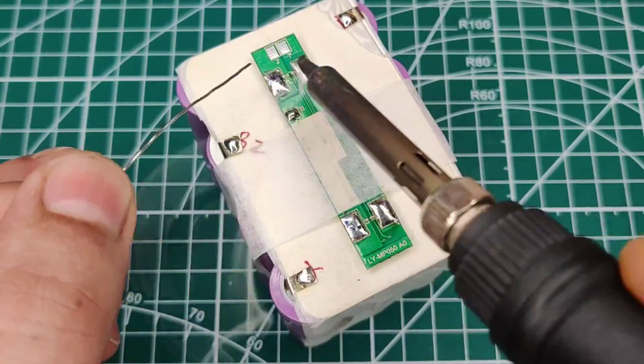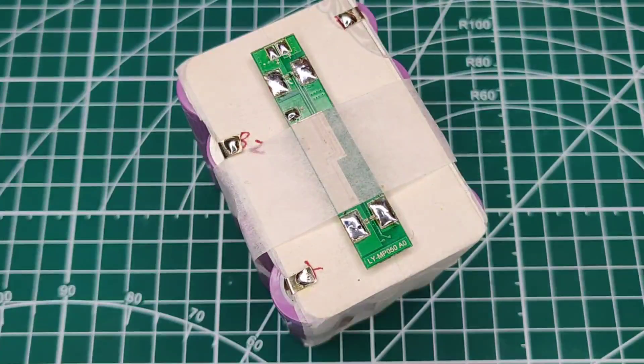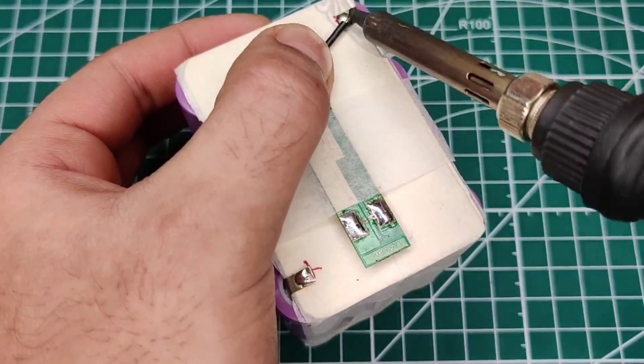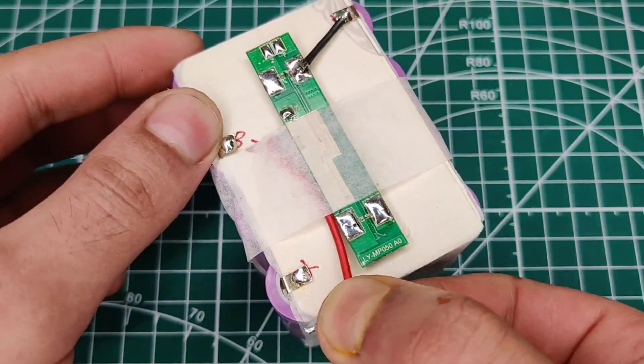After applying a little solder on connection points, use multi-color wires for connection. And connect the BMS with battery according to the markings done earlier.